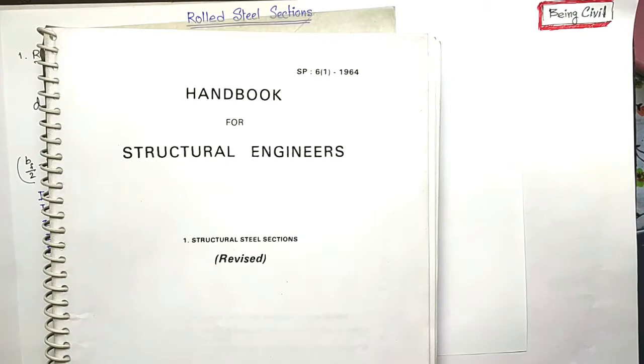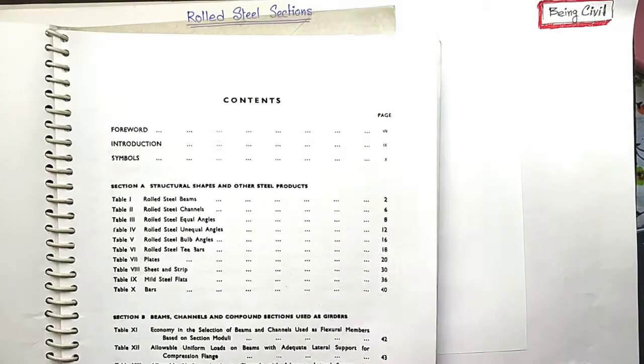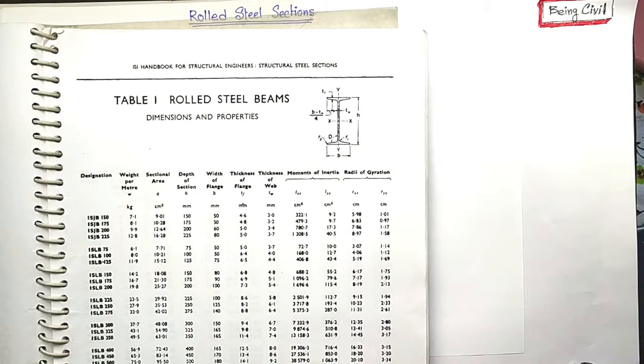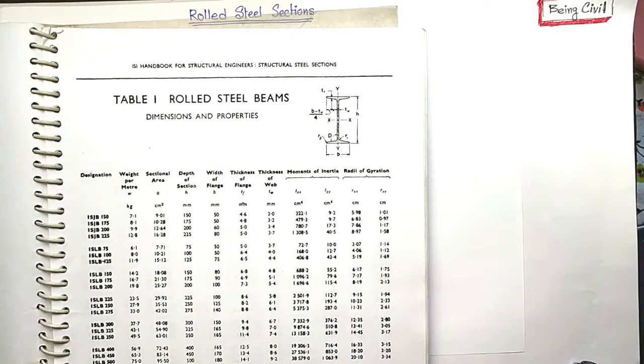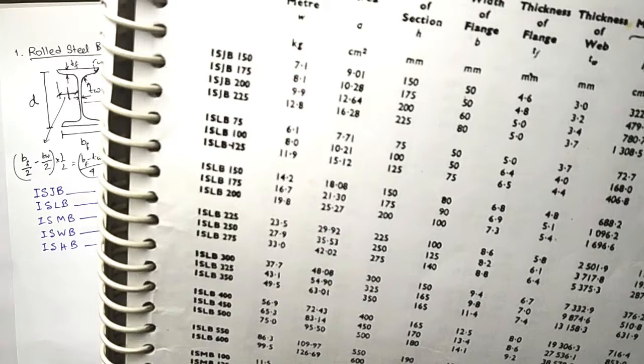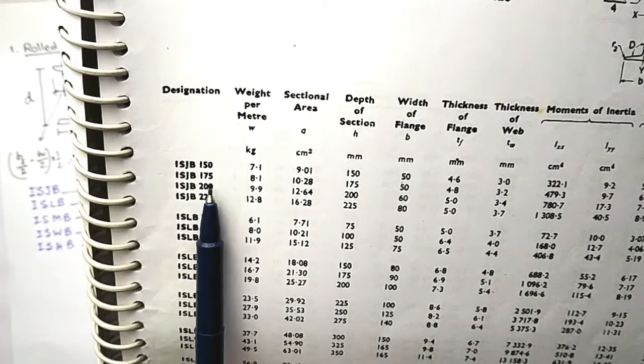This is the handbook for structural engineers, SP 6-1-1964. Lots of tables, all having the properties of the beams. Suppose, this is a rolled steel beam.